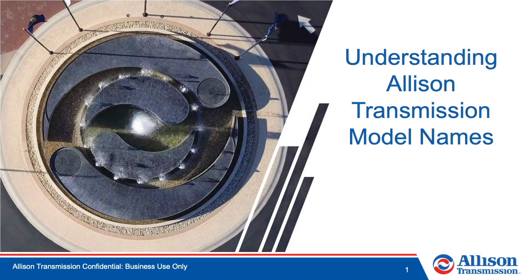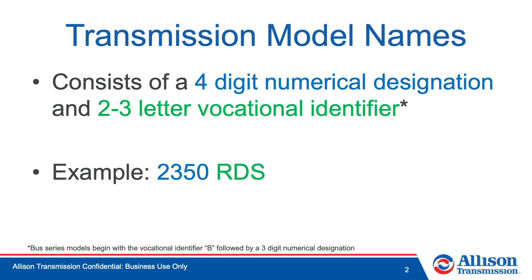Understanding Allison Transmission model names. Allison Transmission models consist of a four-digit numerical designation and a two- or three-letter vocational identifier. Bus Series models are an exception to this — they begin with the vocational identifier B, followed by a three-digit numerical designation, like the B400.